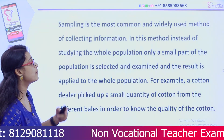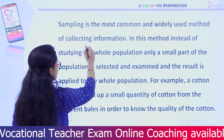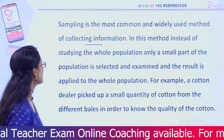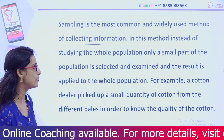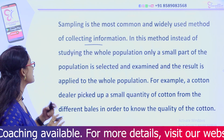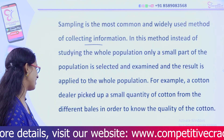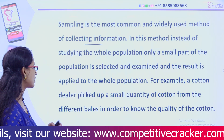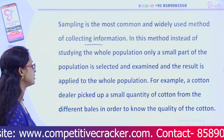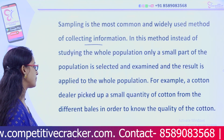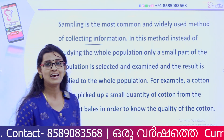Sampling is the most common and widely used method of collecting information. In this method, instead of studying the whole population, only a small part is considered and examined. For example, a cotton dealer picked up a small quantity of cotton from different bales in order to know the quality of the cotton.